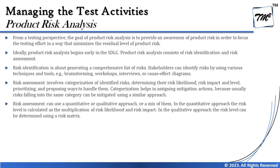Similarly, risks related to performance or security can be categorized together. That is a high-level example of what categorization means. Risk assessment can use a quantitative or qualitative approach, or a mix. In the quantitative approach, risk level is calculated as the multiplication of likelihood and impact. In the qualitative approach, risk level is determined using a risk matrix. Both will be deep-dived at the advanced level.